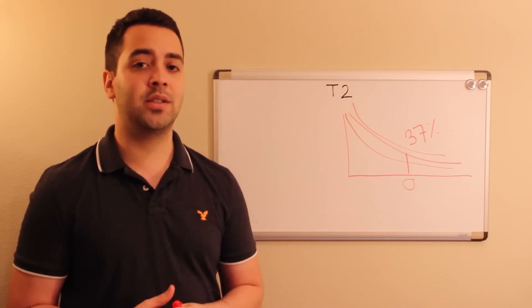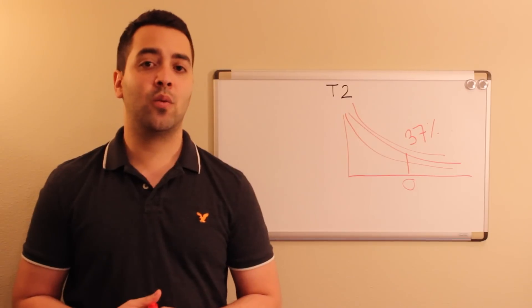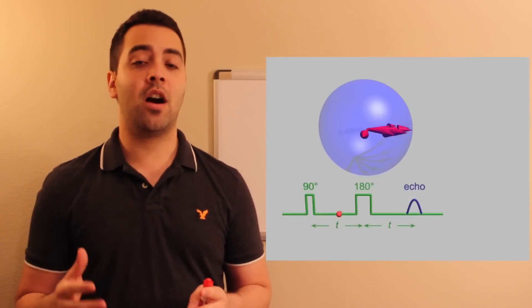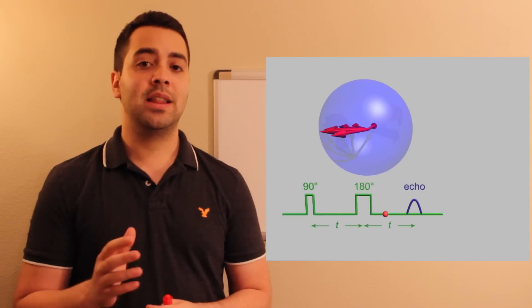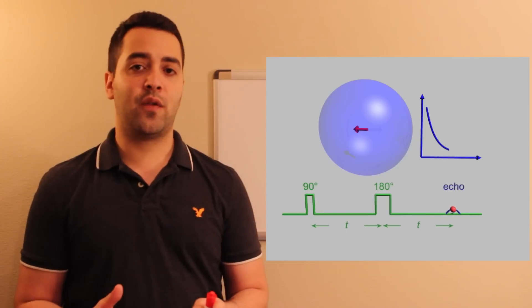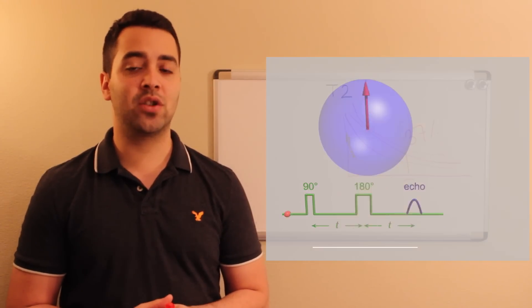...is we use what's called a 180 refocusing pulse, a 180 RF refocusing pulse. That pulse will take care of that, and we'll be able to analyze the difference in transverse magnetization, which is known as T2.